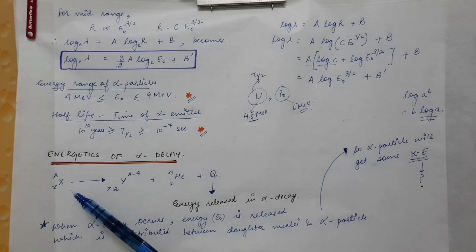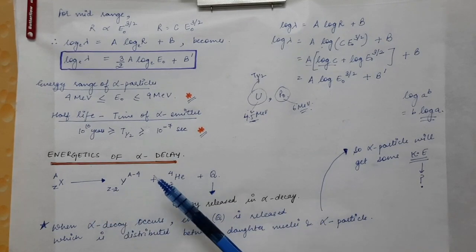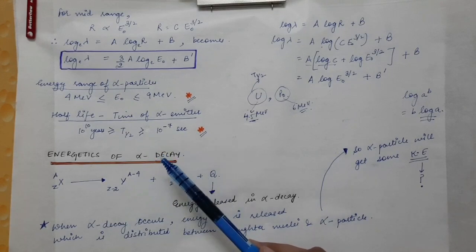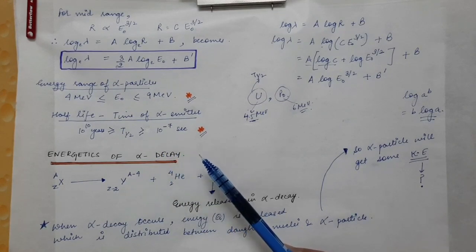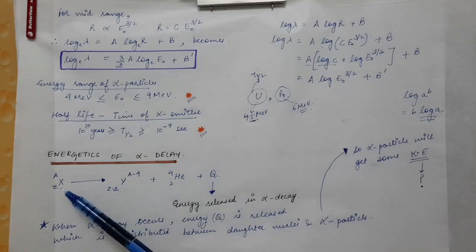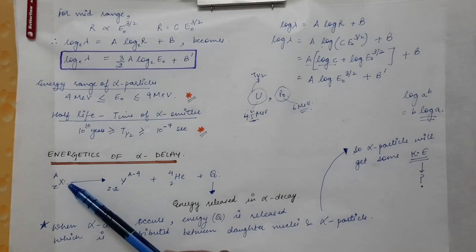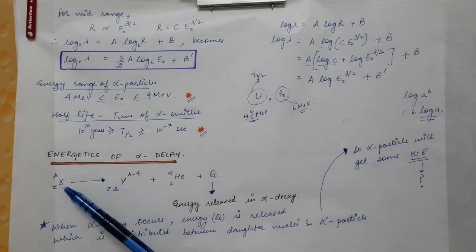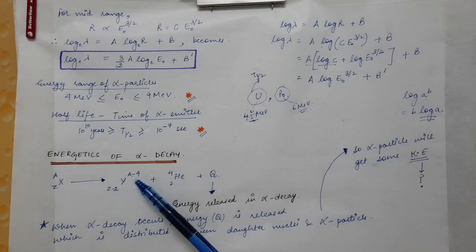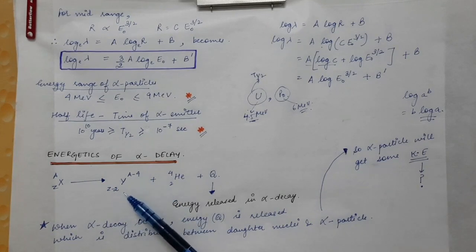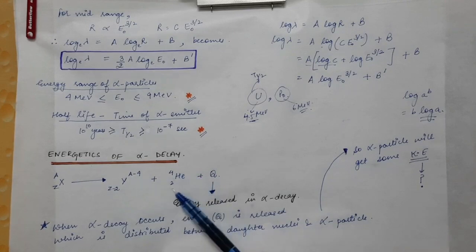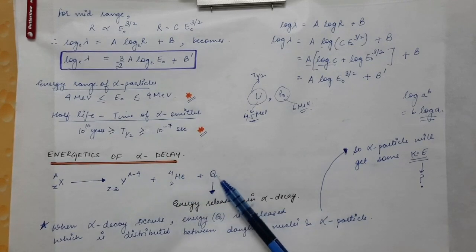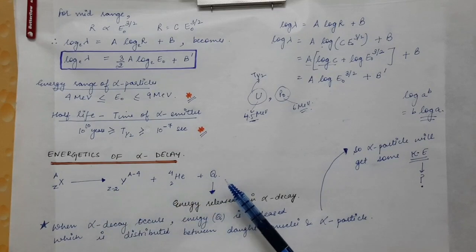Let's consider the equation of alpha decay. The alpha particle is a helium nucleus with two protons and two neutrons. When alpha decay occurs, the parent nucleus X with mass number A and atomic number Z decays to a daughter nucleus whose mass number decreases by 4 and proton number decreases by 2, and an alpha particle is emitted plus some energy is released.